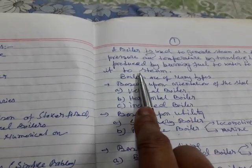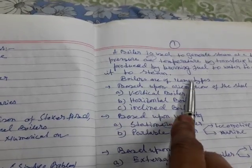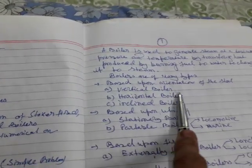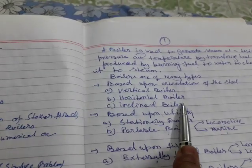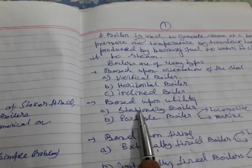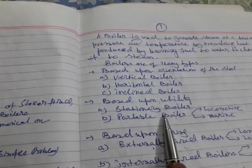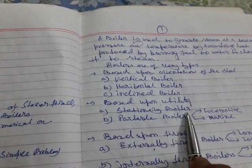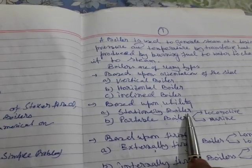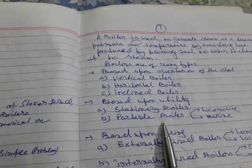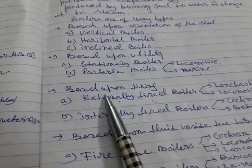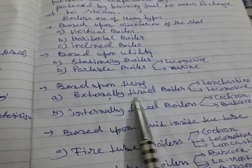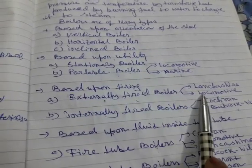How are boilers classified? Based upon the orientation of the shell, boilers may be classified as vertical, horizontal, or inclined boilers. Based upon utility, there are stationary boilers — used in power plants — and portable boilers, which are used in locomotives and marine applications. Based upon firing, there are externally fired and internally fired boilers.